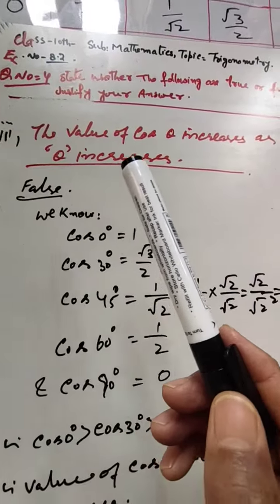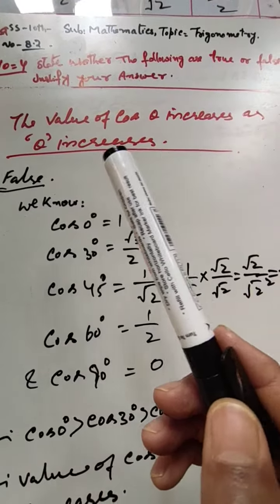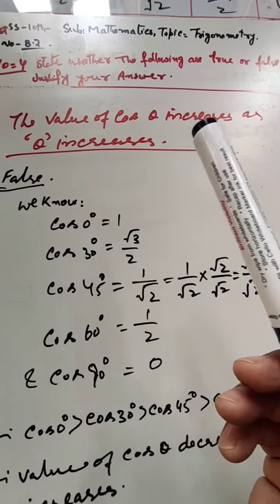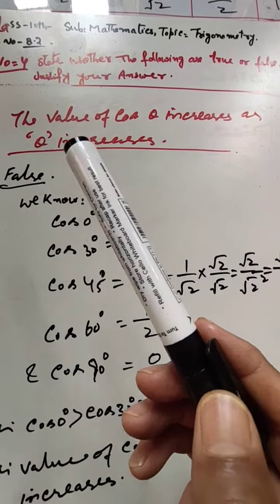In question number 4, we have to see if the given parts are true or false. Here the statement is: the value of cos θ increases as θ increases.